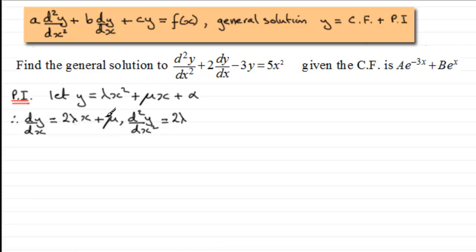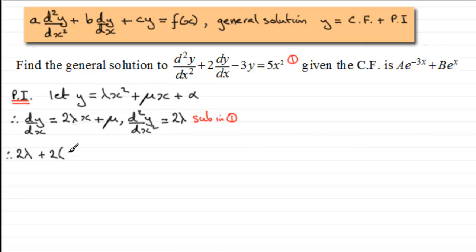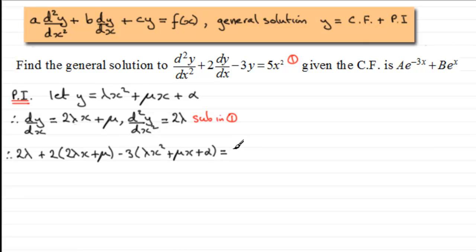We substitute these three results into the original equation — equation 1. So we get: 2λ + 2(2λx + μ) − 3(λx² + μx + α) = 5x².